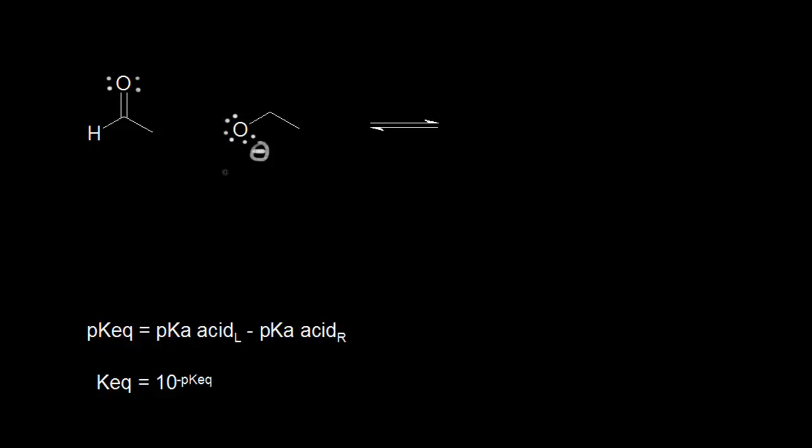For example, this base right here is the ethoxide anion, which you could get from sodium ethoxide, Na+ OEt-. This could act as a base and take a proton from an aldehyde or a ketone. In this case, we have an aldehyde, acetaldehyde here, and we need to find the alpha carbon. The alpha carbon is the one next to the carbonyl carbon.